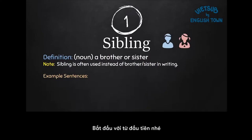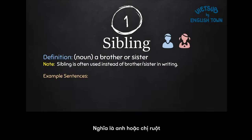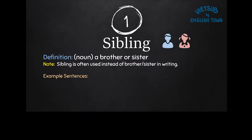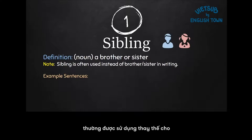Let's look at word number one: sibling. The definition is a brother or sister. This is quite simple. Sibling, as is noted, is often used instead of brother or sister in writing.